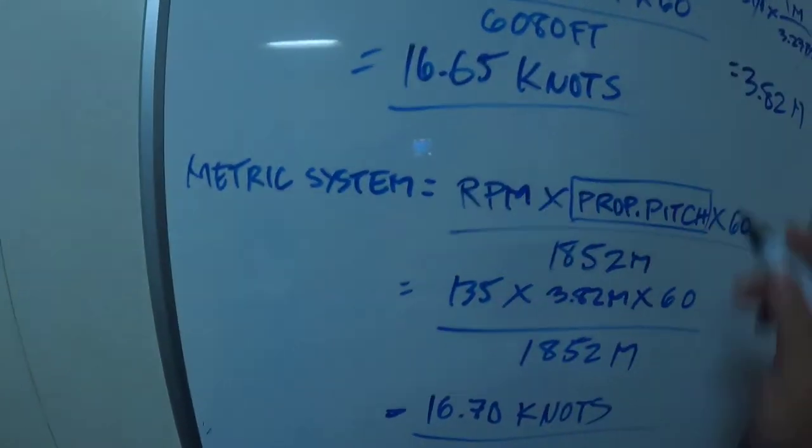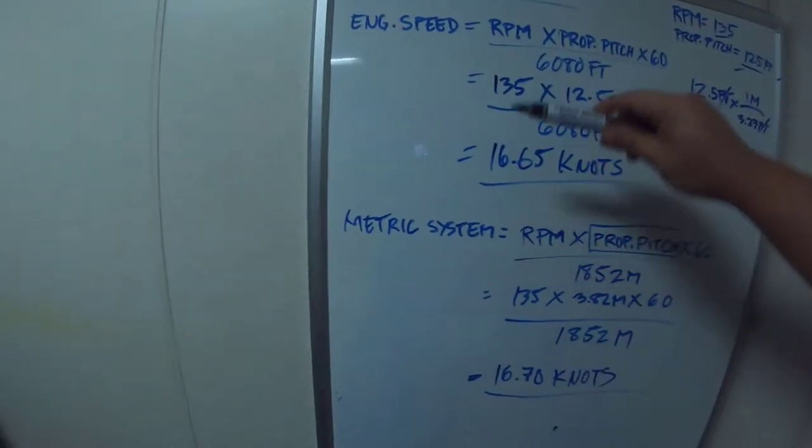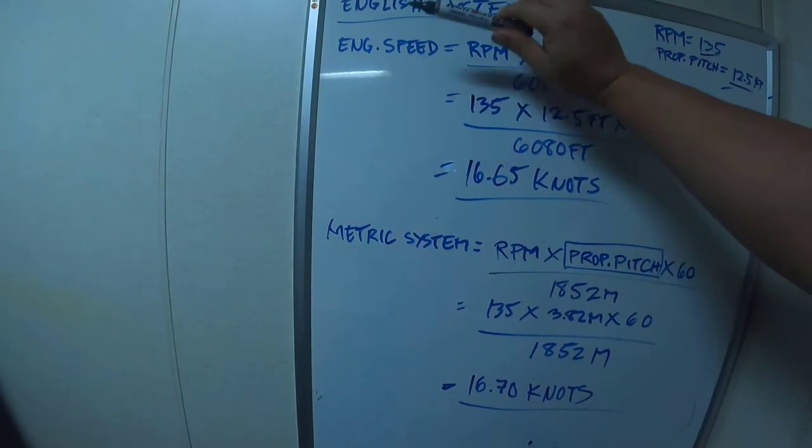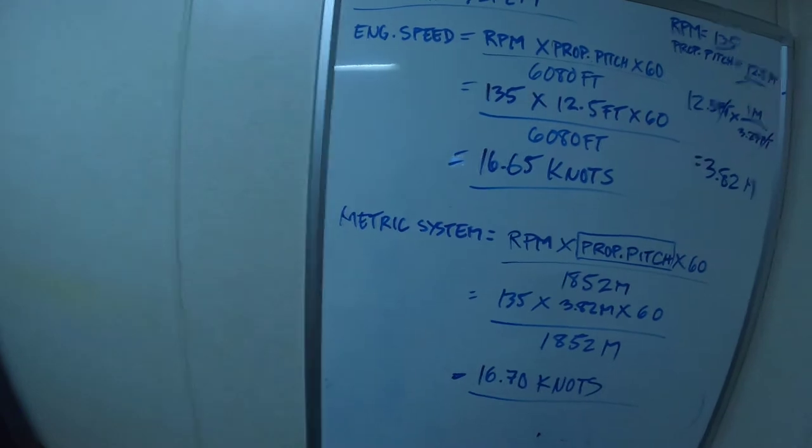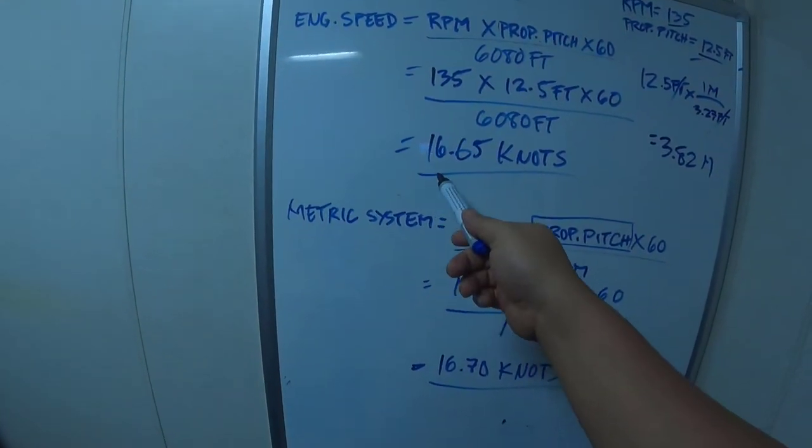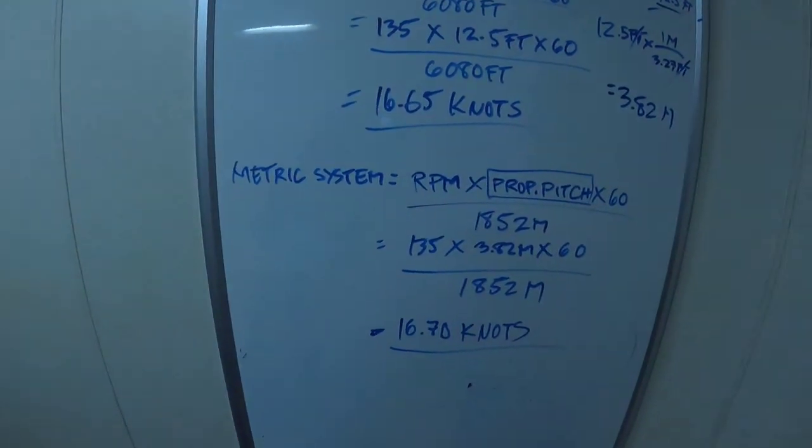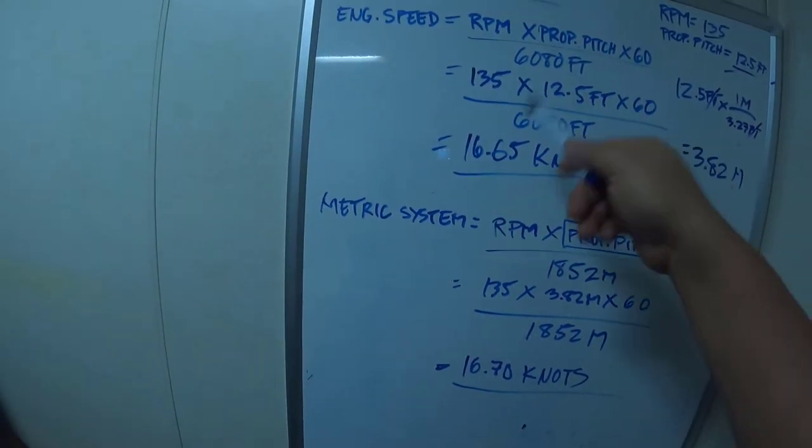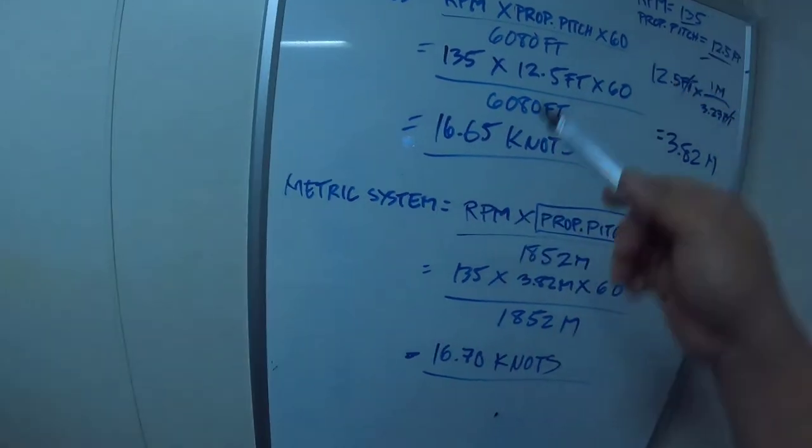So they have the same answer. Whether you use English system or metric system, it's the same: 16.70, 16.65. There's only a 0.05 difference. But if you round off, 16.7, they're the same.